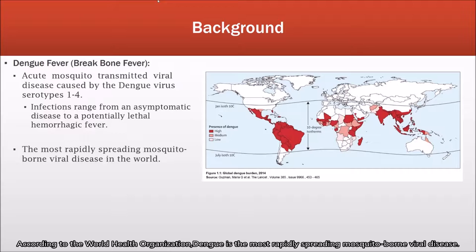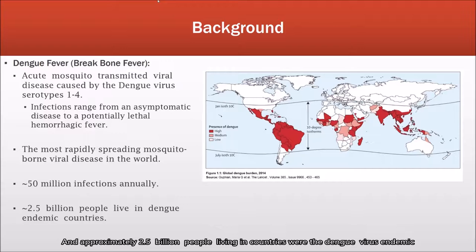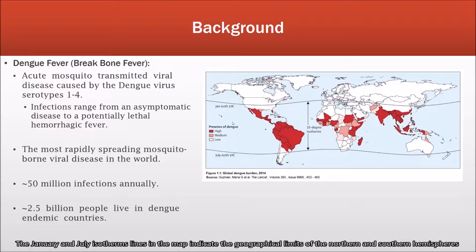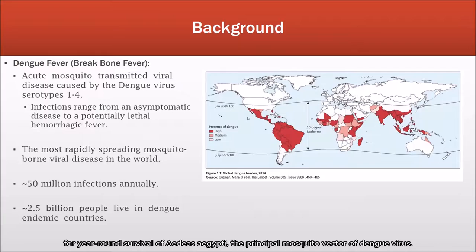According to the World Health Organization, dengue is the most rapidly spreading mosquito-borne viral disease, with an estimated 50 million infections annually and approximately 2.5 billion people living in countries where the dengue virus is endemic. The January and July isotherm lines on the map indicate the geographical limits in the northern and southern hemisphere for year-round survival of Aedes aegypti, the principal mosquito vector of the dengue virus.